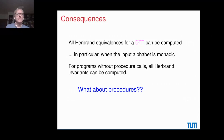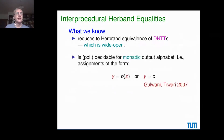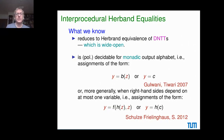For procedures with monadic output alphabet, one can still do something, and one can translate that back to certain forms of tree transducer equivalence, giving equivalence results in certain restricted cases. Now let's go to polynomial invariants.